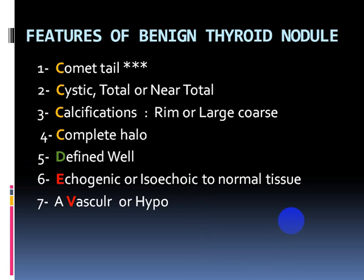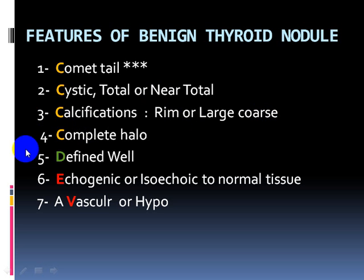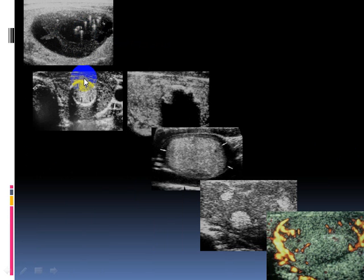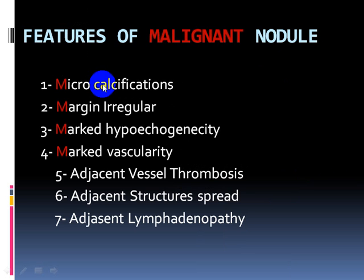The features of benign thyroid nodules are: (1) comet tail sign — a sure sign; (2) cystic — total or near total; (3) rim or large coarse calcifications; (4) surrounded by a complete halo; (5) well-defined margin; (6) hyperechoic or isoechoic to normal tissue; and (7) avascular or surrounded by peripheral vascularity around the margin. Here are different images showing comet tail sign, peripheral shell-like calcification, cystic nature, surrounding halo, and peripheral vascularity — all features of benign nodules.